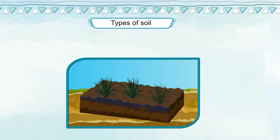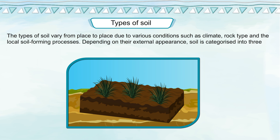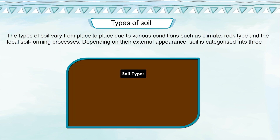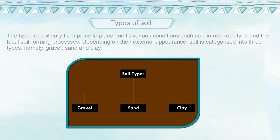Types of Soil. The types of soil vary from place to place due to various conditions such as climate, rock type and local soil-forming processes. Depending on their external appearance, soil is categorized into three types: gravel, sand and clay.